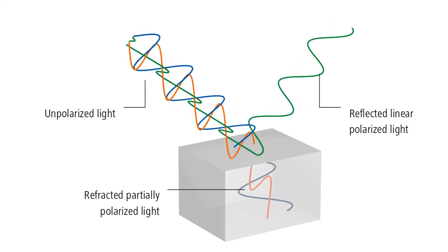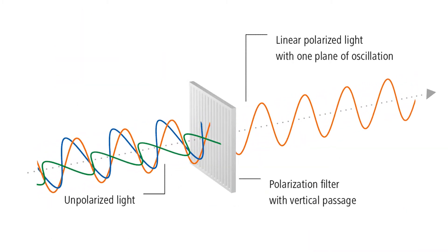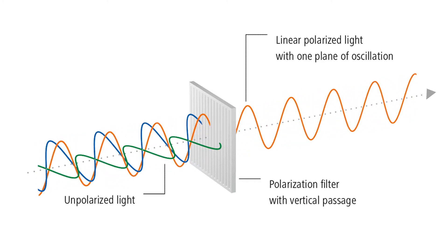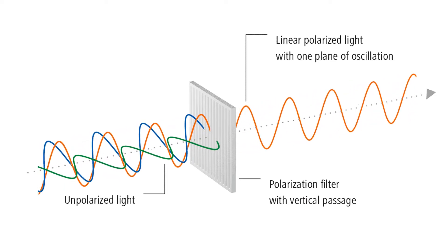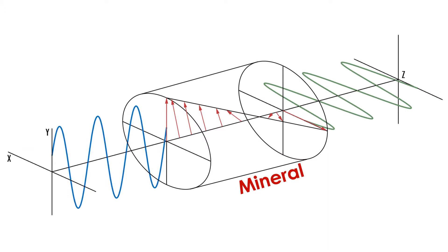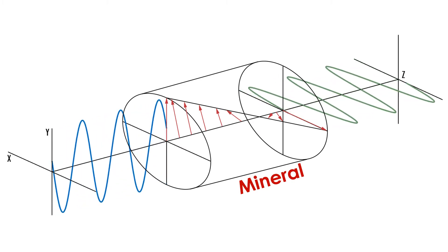The microscope filters unpolarized light, blocks certain waves, and lets polarized light pass through — allowing only light waves vibrating in one plane. The analyzing filter, located above the thin section, does the same thing as the polarizing filter but is mounted perpendicular to it. As a result, light waves can only pass through both filters if they are vibrating at 90 degrees with respect to each other.